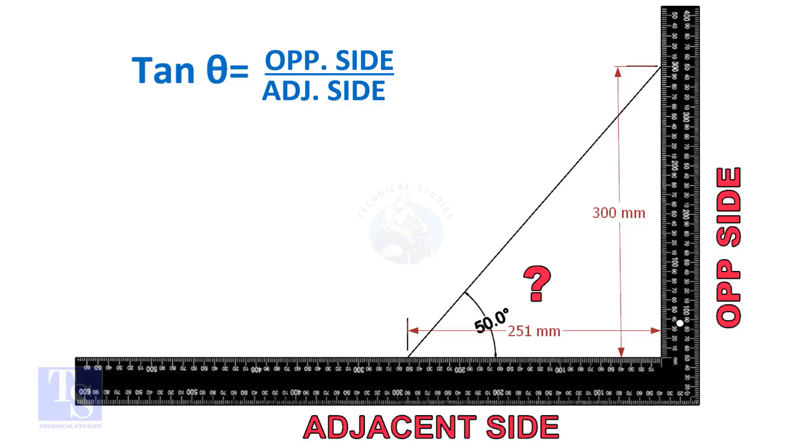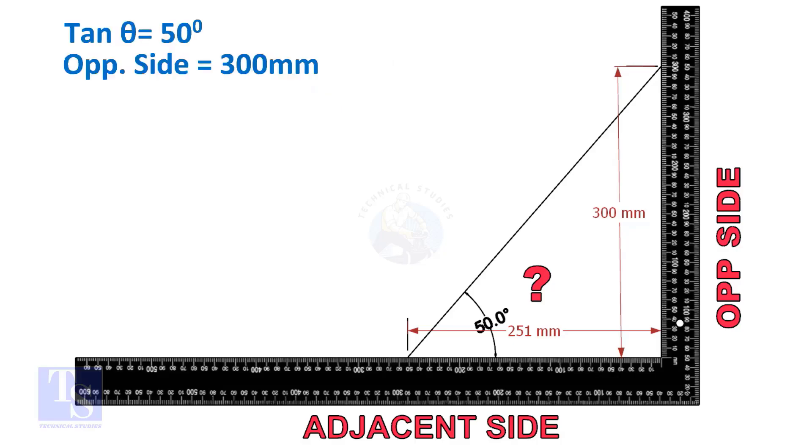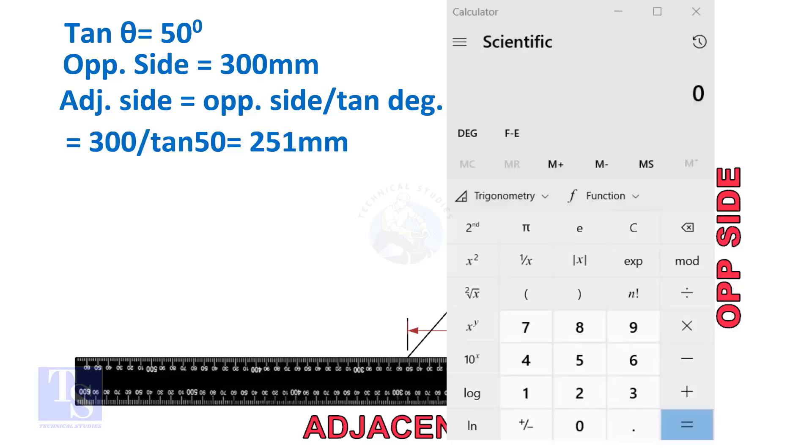Let us assume the opposite side is 300 millimeters, but you can take any suitable dimension as required. Adjacent side is equal to 300 divided by TAN 50 degree. Let us calculate.